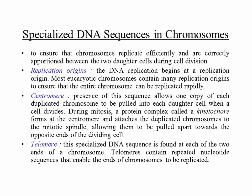To ensure chromosomes replicate efficiently and are correctly apportioned between the two daughter cells, each chromosome has specialized regions. The first is the replication origin — DNA replication begins at a replication origin. Replication origins are rich in AT sequences because of the fewer number of hydrogen bonds. Most eukaryotic chromosomes contain many replication origins because you have to replicate a lot more DNA, whereas for bacteria it's usually just one location.